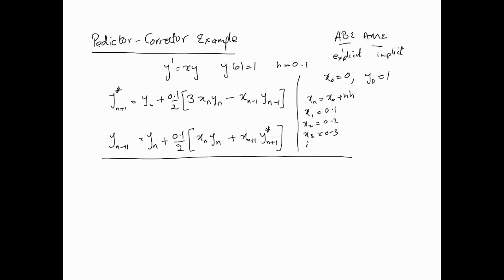We don't have a problem calculating x at any step, but the issue is computing y. To start the method we need y1. To get y1 we have to use the Runge-Kutta method, so we'll use the second-order Runge-Kutta. We're just trying to calculate y1 using this approach.